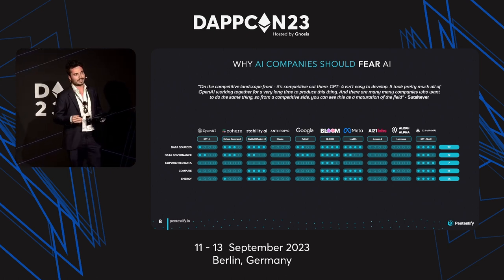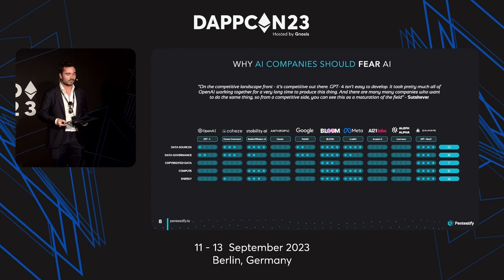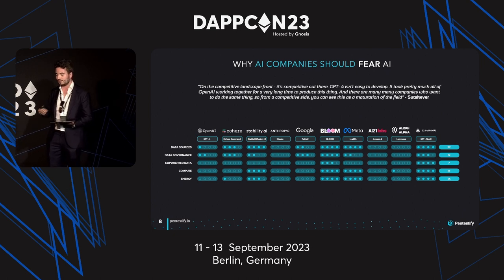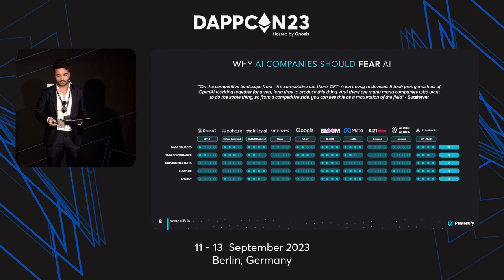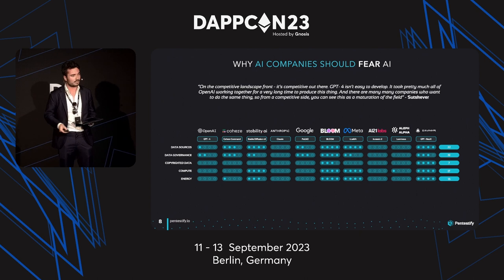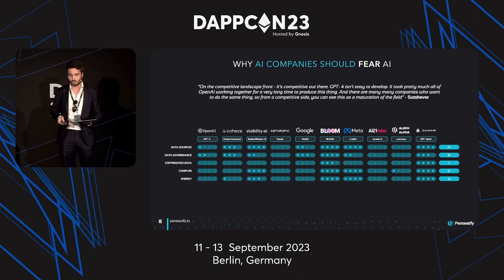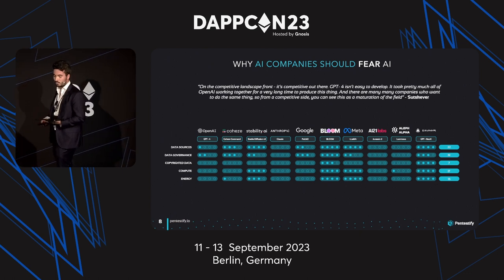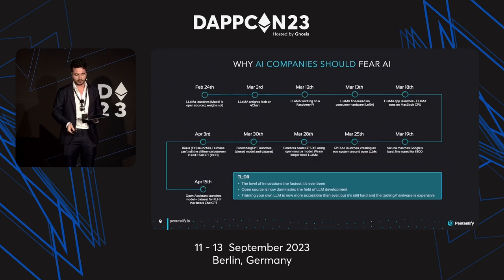We'd like to talk about the opposite of the monopoly of AI — why AI companies should fear AI, and why it is really down to the community. It should be up to us, up to the community, to really drive and set the pace for the future of development in Web3, including AI and blockchain, and not to big corporations. GPT-4 was the first commercially available one, even though Google started way before. Then we've got Stability AI, Claude by Anthropic, and in this case it seems that Mark Zuckerberg is actually one of the good guys — one of the biggest research companies putting their research out there for free.